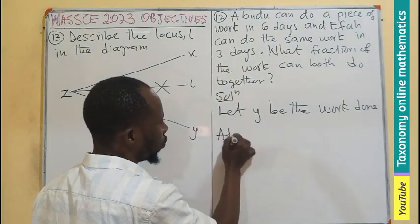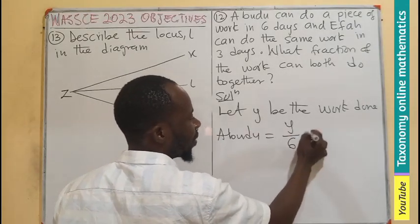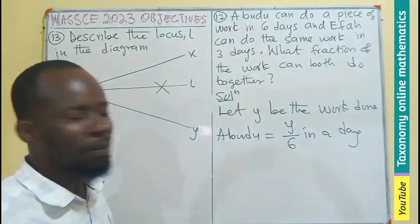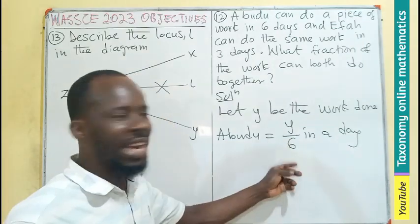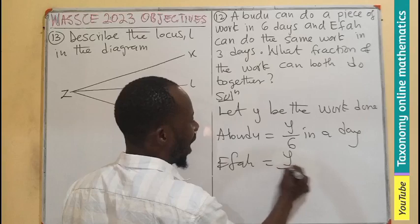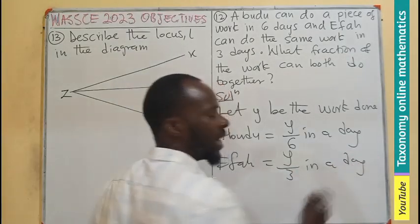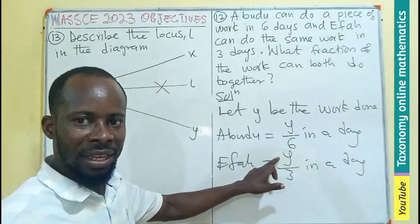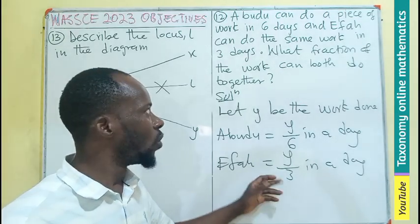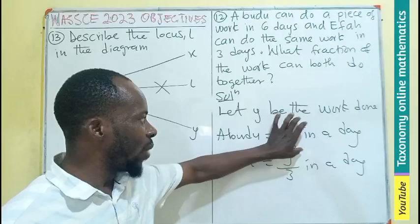If y is the work that has been done, meaning Abudu will be doing y divided by 6 in a day. We're looking for work done together in a day. Then Effa will also be doing y divided by 3 in a day.